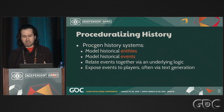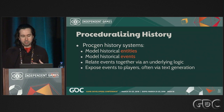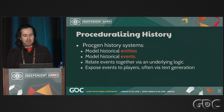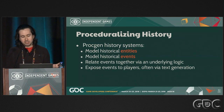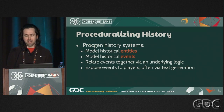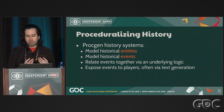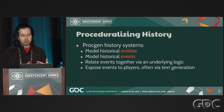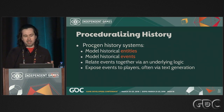This is what we came up with, and the patterns I've seen repeated in other games generating history. These types of systems tend to model historical entities — things like people, places, and items like artifacts. They model historical events which change the properties of those entities. The events are related together via some sort of underlying logic, and then the events are exposed to players, often via text generation.